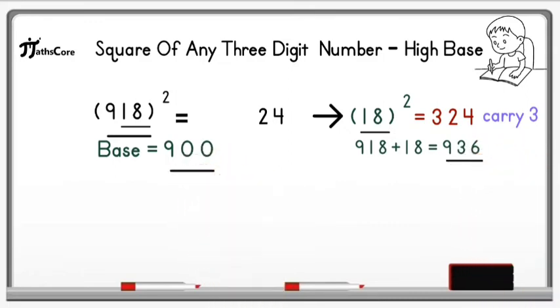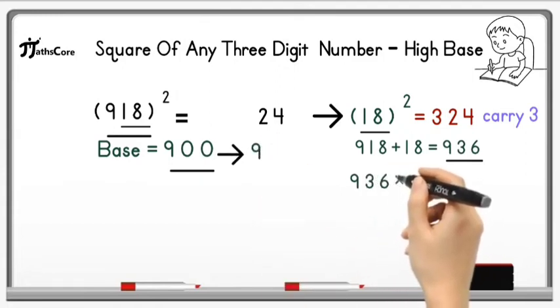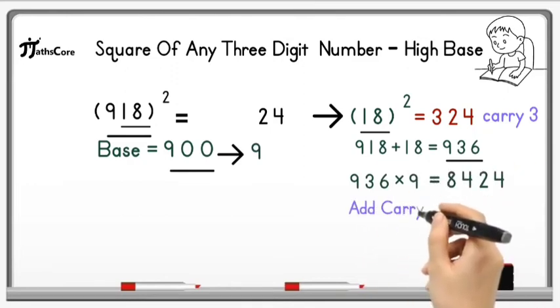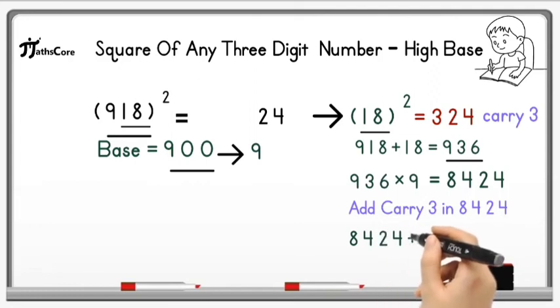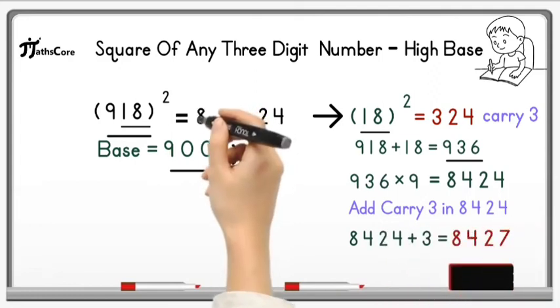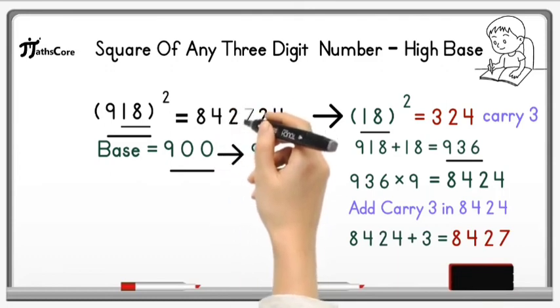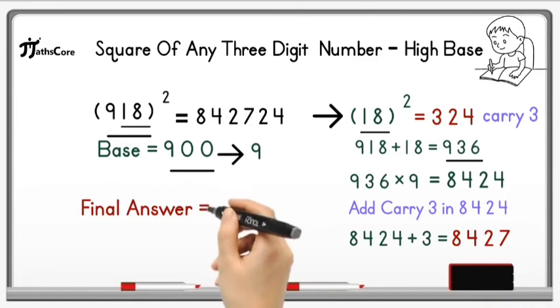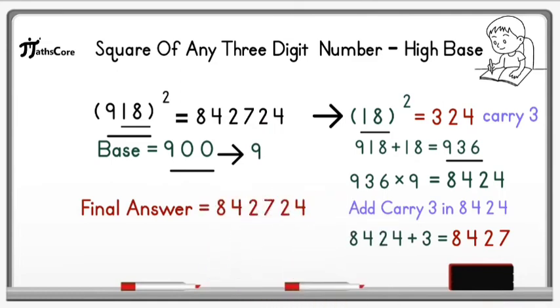After that, take whole number 918 and add 18 in it. So 918 plus 18 is equal to 936. Now multiply this 936 with base number, which is 900, so instead of 900 we will just write 9 here. So 936 multiply by 9 is equal to 8,424. Now add this carry 3 in 8,424, so it is equal to 8,427. Now write down this number before 24 in the product. So this is your final answer: 842,724, which is square of 918.